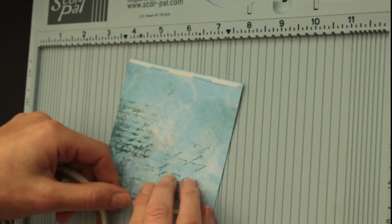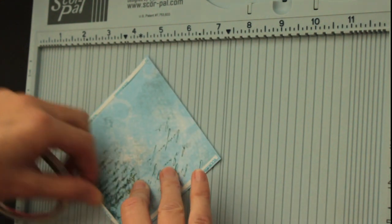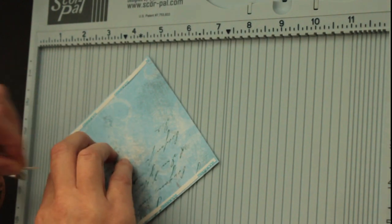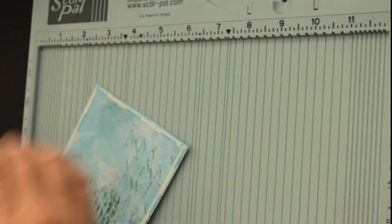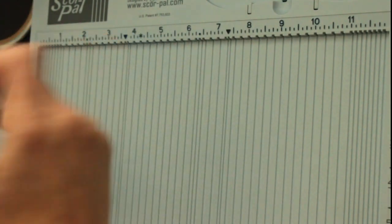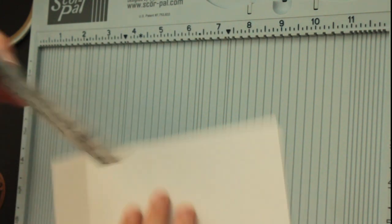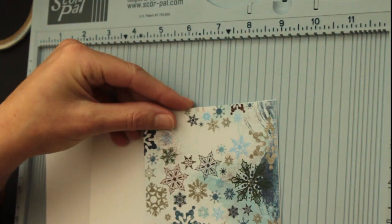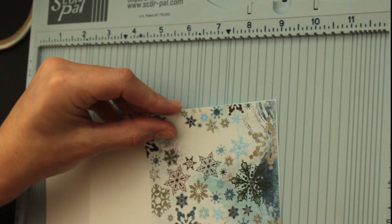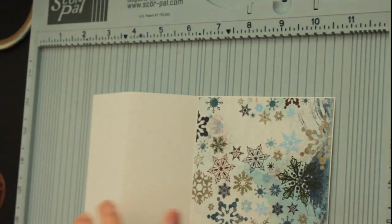First, I add patterned paper to the part that does not have a fold on it. I'll just adhere that with score tape. You can use any adhesive.